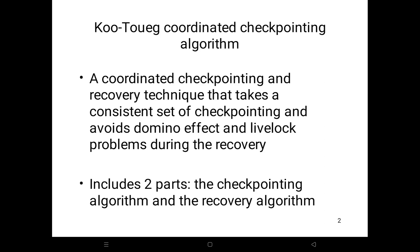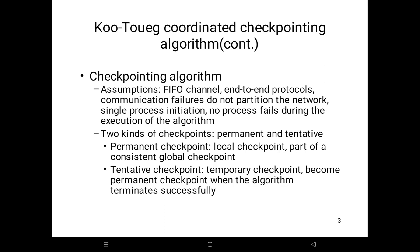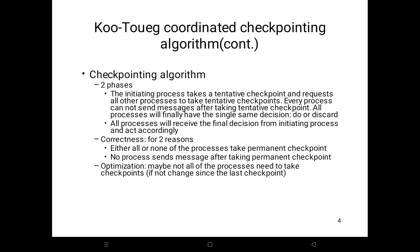The coordinated checkpointing algorithm facilitates two kinds of checkpoints: one is the permanent checkpoint and another one is the tentative checkpoint. The checkpointing algorithm consists of two phases. In phase one, the initiating process Pi takes a tentative checkpoint and sends a request to all other processes to take a tentative checkpoint.